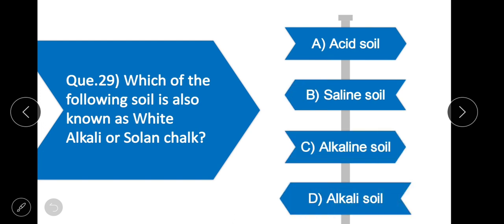Question 29: Which of the following soils is also known as white alkali or solonchak? Option B is correct — saline soil.